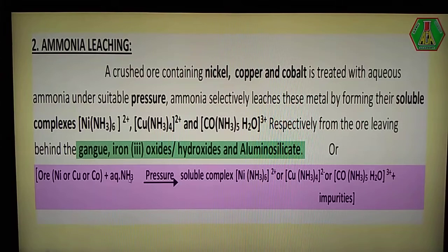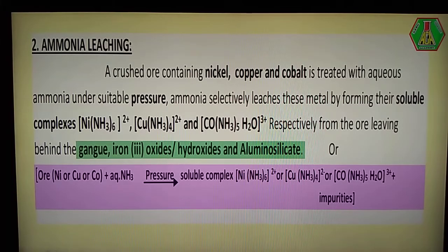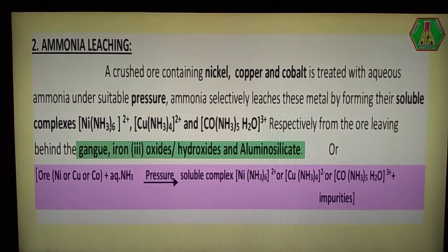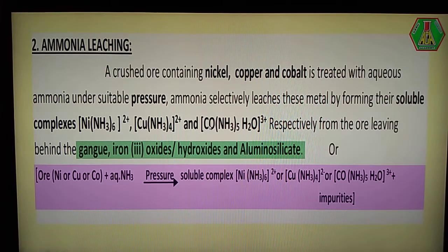Ammonia reacts with the metal directly to form soluble complexes. If nickel metal is present in the ore, the nickel metal is directly combined with ammonia to form a nickel-ammonia complex. Similarly, copper-ammonia complex and cobalt-ammonia complex are formed respectively.